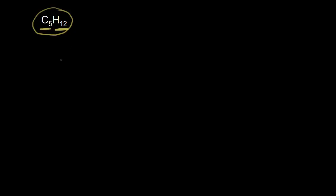We need five carbons, so for our first isomer we could just draw five carbons in a chain. Here are my five carbons in a chain. You should have already seen the video on bond line structures before this one. Let's draw out those five carbons and double check that we have the correct number of hydrogens.